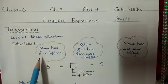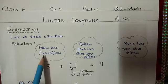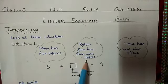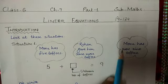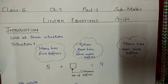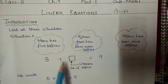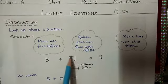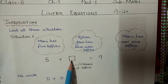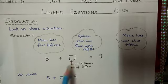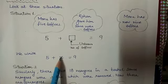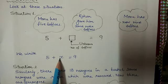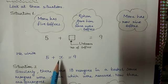Look at these situations. Monu has 5 toffees, Rohan gave him some more toffees. Now, Monu has 9 toffees, that is 5 plus some unknown toffees makes 9. If we want to find the value of this unknown number, let this unknown number is equal to x. If I got the value of x, I will be able to know the toffees with Monu, right?